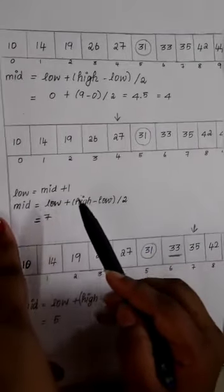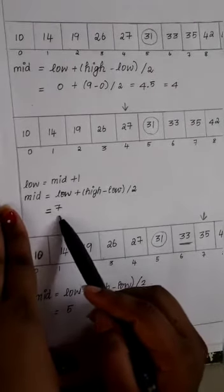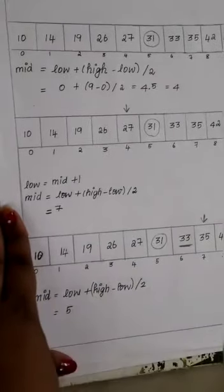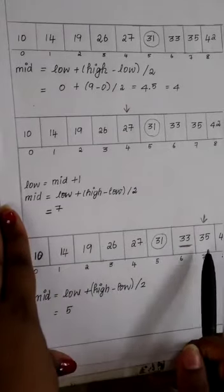When we find the new mid value again, we get it as 7. So now our new mid is 7.